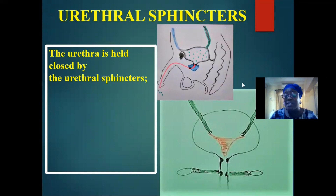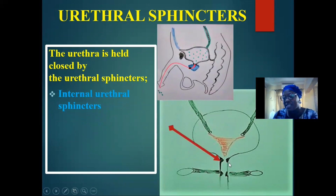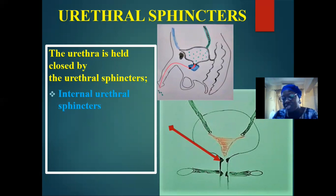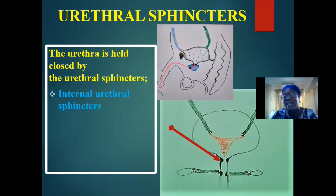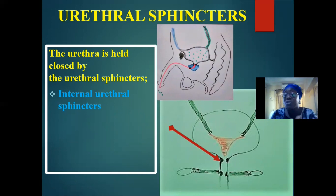We have two major types. We have the internal urethral sphincter — this is the internal urethral sphincter. It is seen at the beginning of the urethra, just after the urinary bladder, at the neck of the urinary bladder. It is at this point that we have the internal urethral sphincter — from the name, it is on the inside. It tends to regulate the rate at which urine is being released. It is like a control channel formed by smooth muscle, whose action cannot be controlled, so it is involuntary. We cannot control the action of this sphincter.